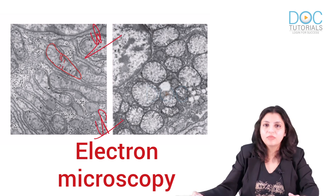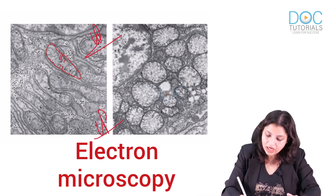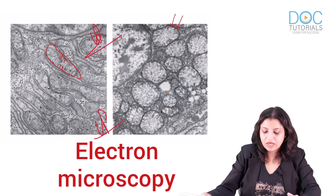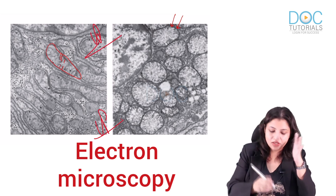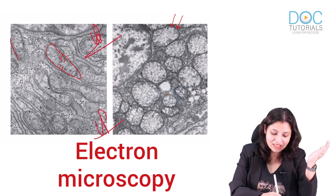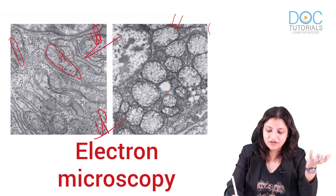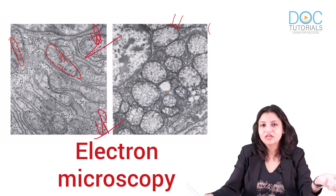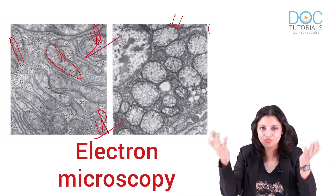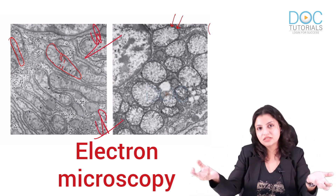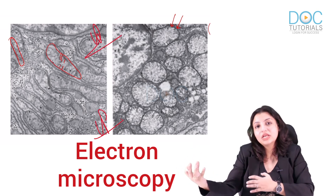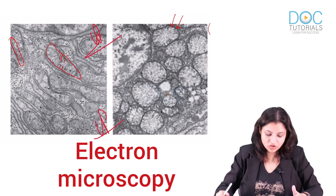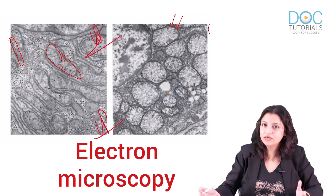Now look at this — everybody should identify this organelle; it has cristae in it. This is a normal mitochondria. But look at this cell — what is happening to the mitochondria? The mitochondria, instead of being sleek and slim, is now round and ballooned out. This is what is called swelling of mitochondria.